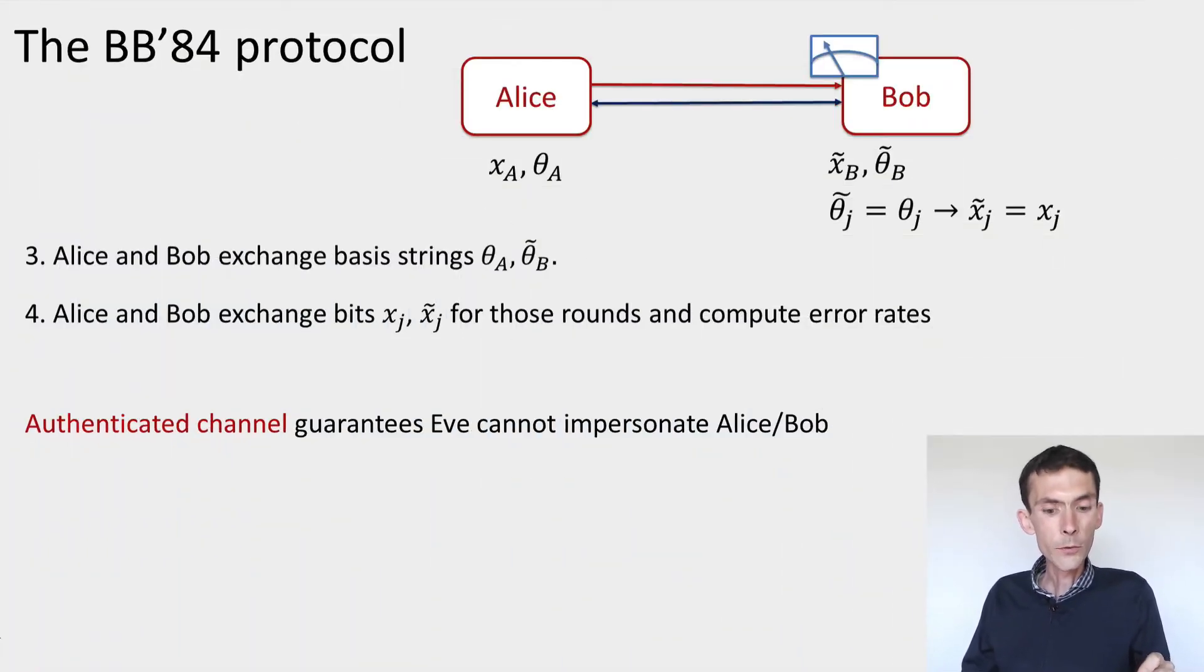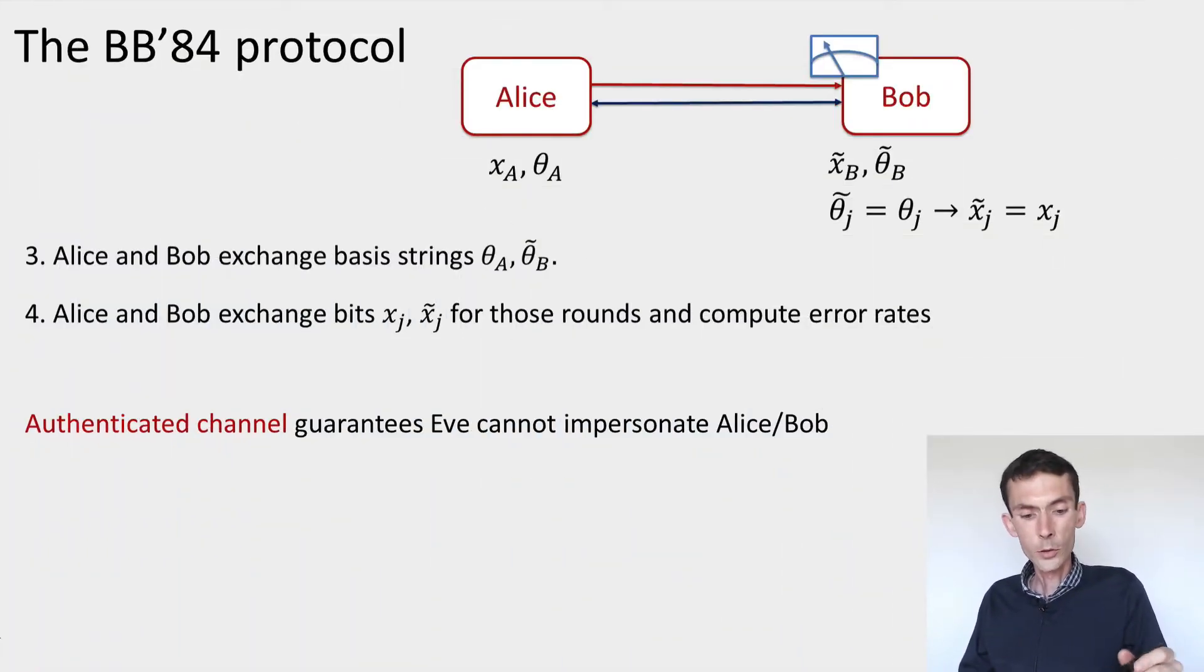If you remember what the BB84 protocol is, it involves Alice sending BB84 states to Bob, and then it has some pretty lengthy phases of public communication. For instance, Alice has to choose some bases and obtain some outcomes, and some of these bases are exchanged between Alice and Bob.